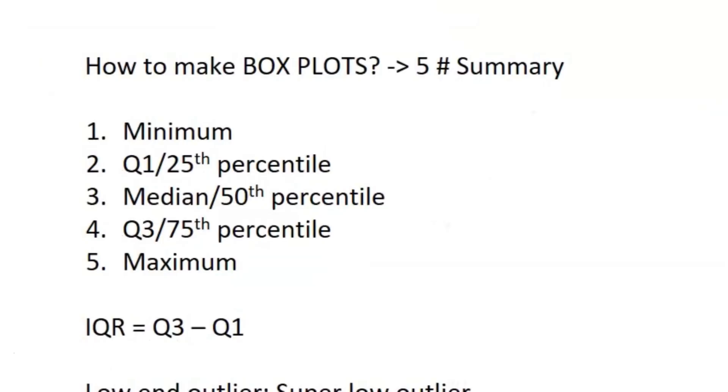Okay, so the last thing for exploring data in this part is how to make box plots. You need to know the five-number summary. So the first number in the summary is your minimum. That's just the smallest value you have. Then you have the 25th percentile, or Q1.